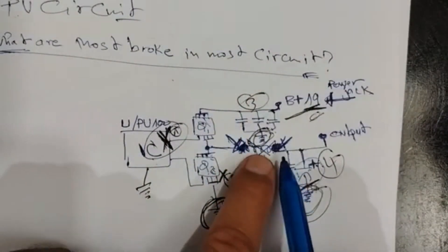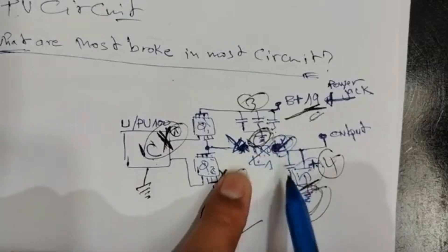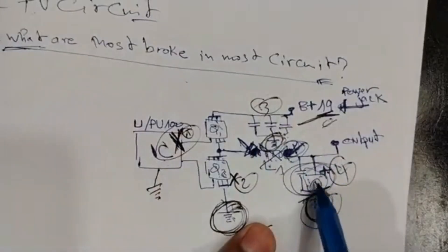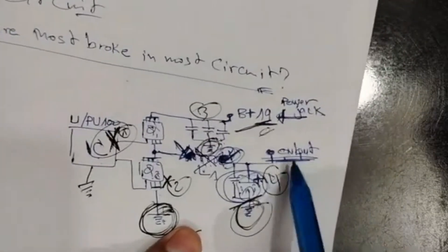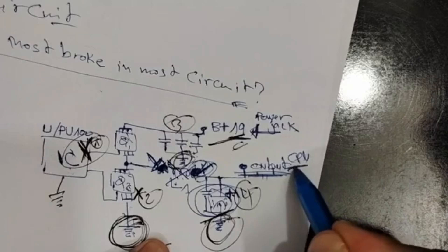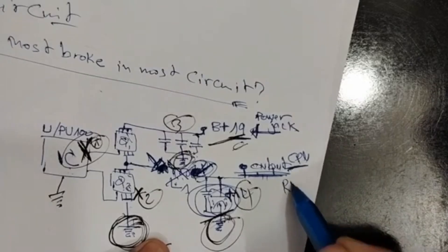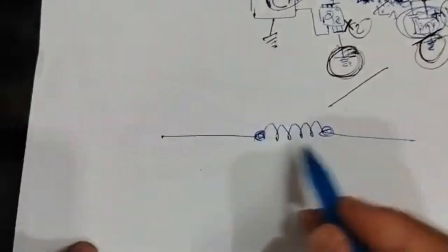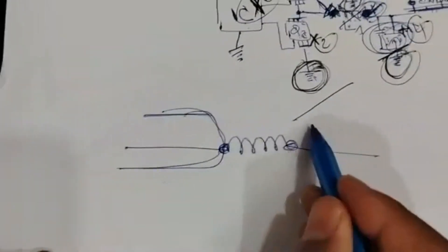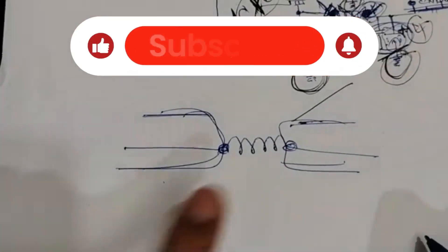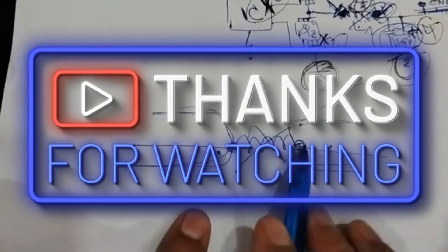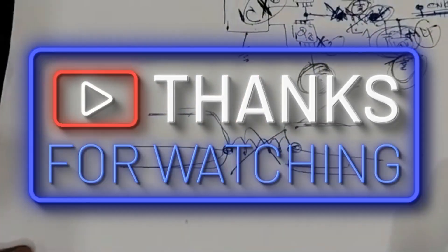If you remove the inductor and the short is on the output side, those input components are good — you have a problem with the output capacitors or the output circuit. If the output is the CPU, you have a problem with the CPU circuit. If the output is RAM, you have a problem with the RAM circuit. The inductor separates the two stages, making it very easy to isolate the troubleshooting.